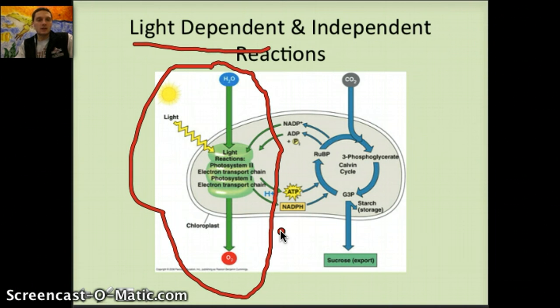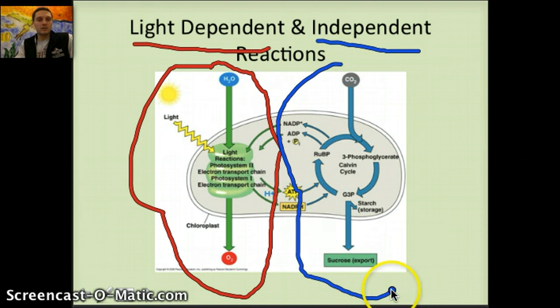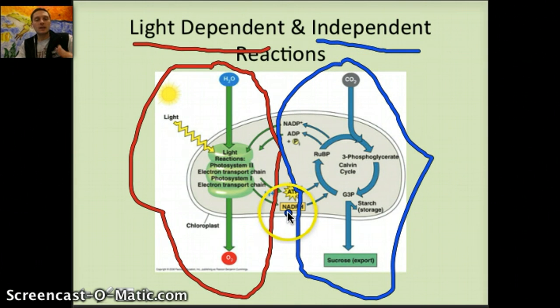The second of these reactions is the light-independent. In the light-independent, obviously light is not necessary. And this is the portion of the sequence where CO2 is being used with that ATP and that NADPH that was previously produced in order to make sucrose or sugars. That's what the light-independent reaction entails: producing those sugars.